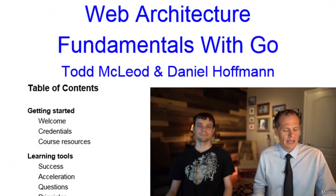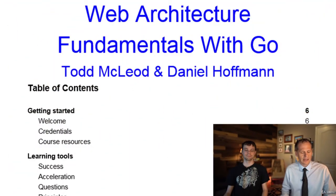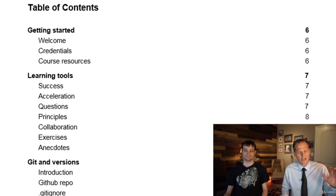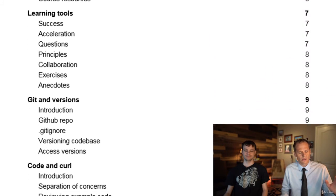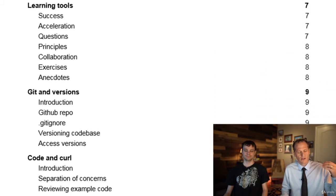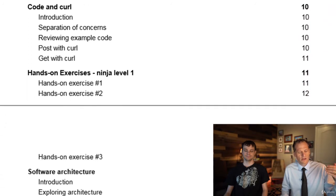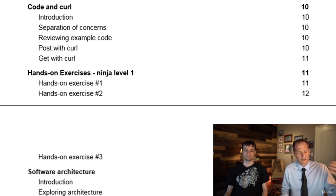If you take a look at our course outline here, you can see we're going to go through a Getting Started section and then learning tools. We're going to go through Git, how to use versions and how to version a repo, and then some basic code and how to use curl to do a RESTful web application and make requests and get responses back.